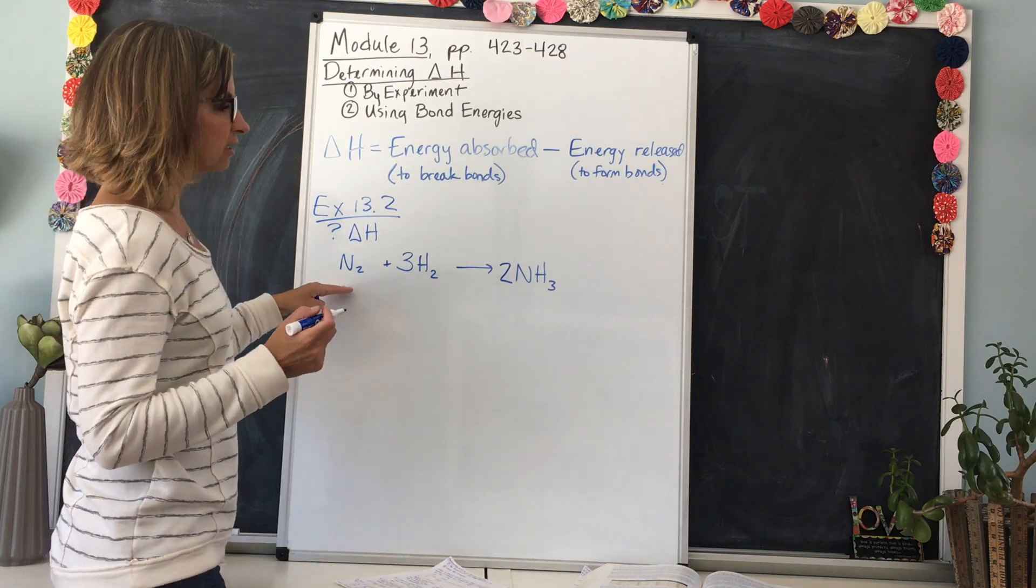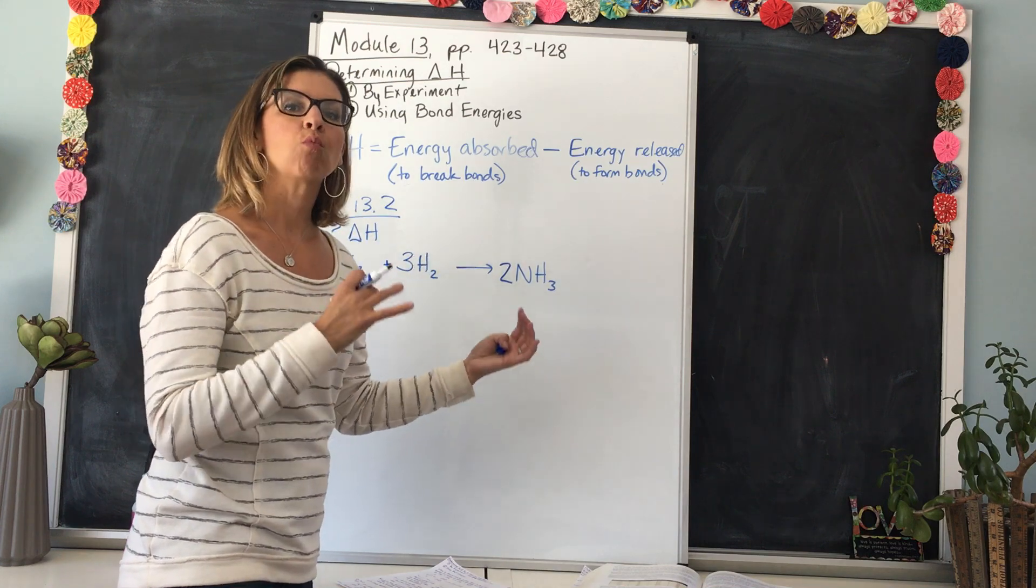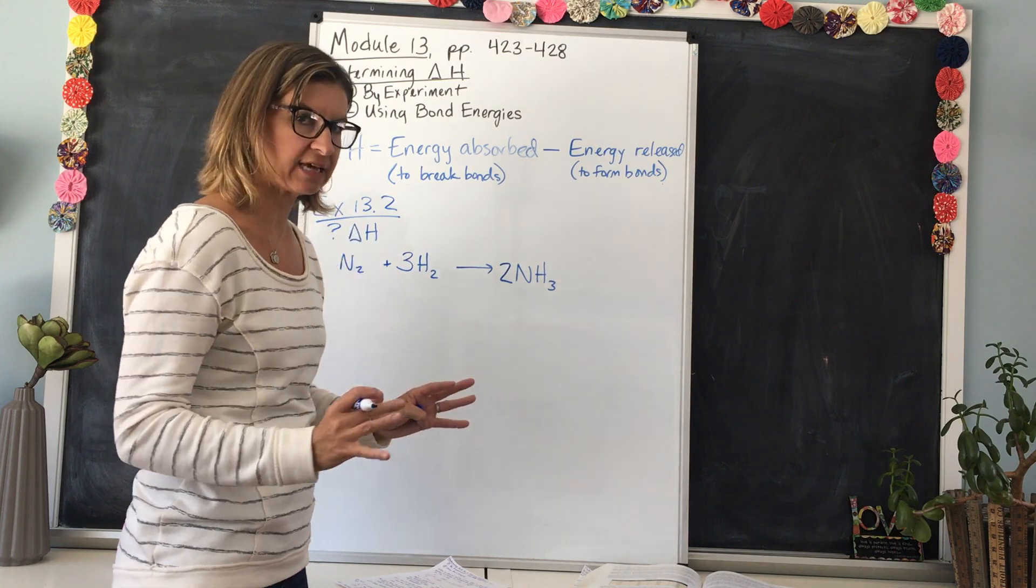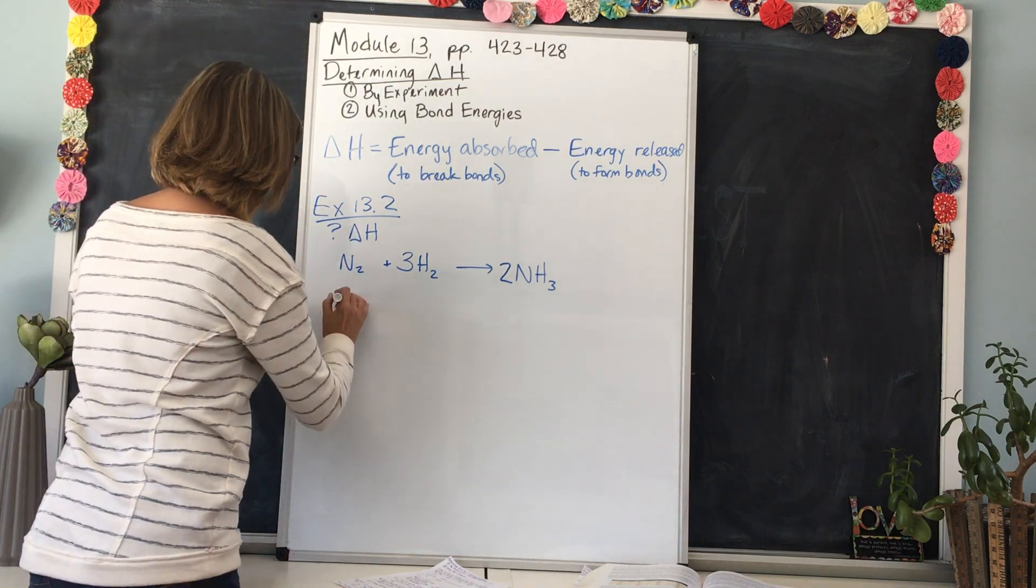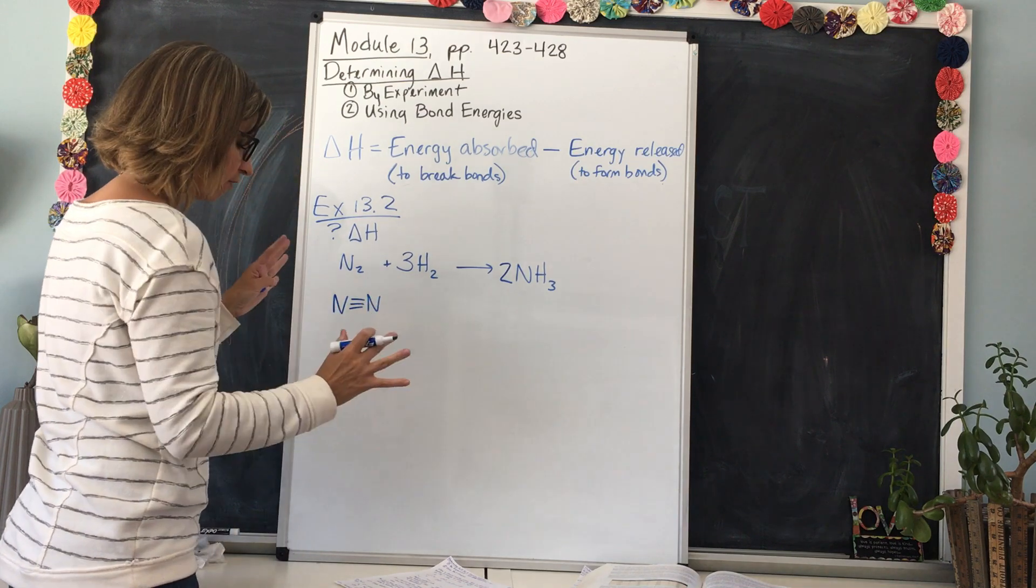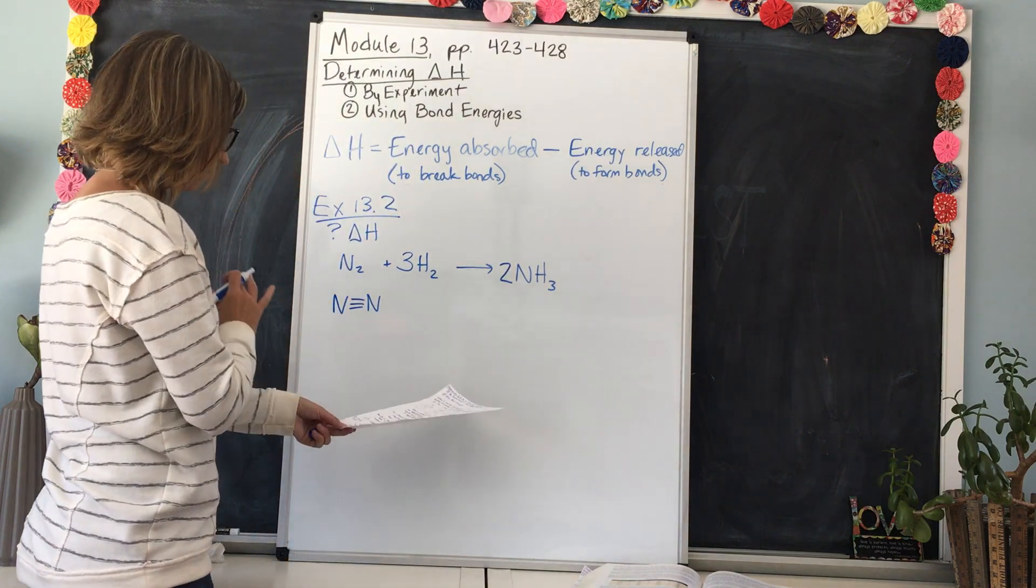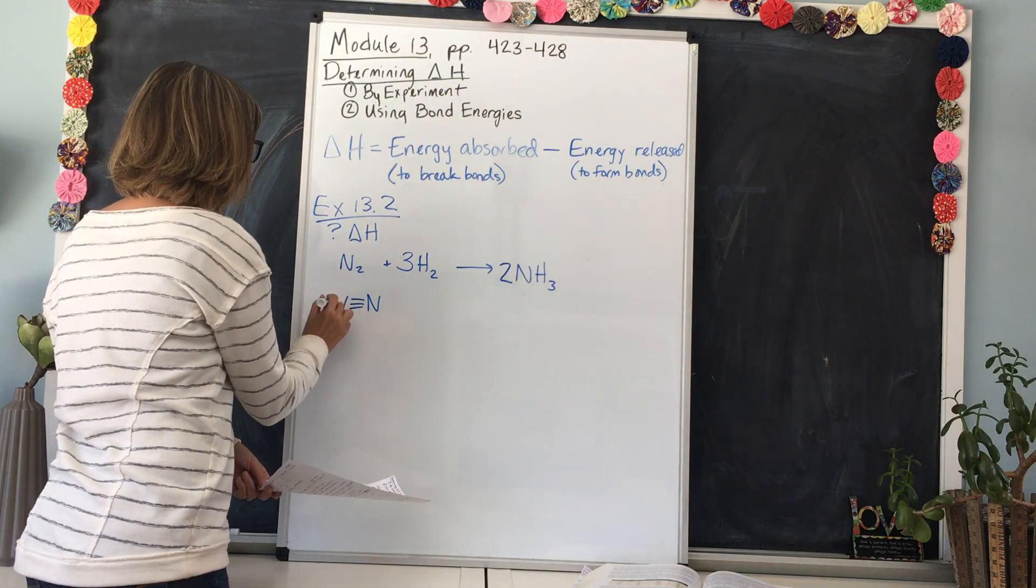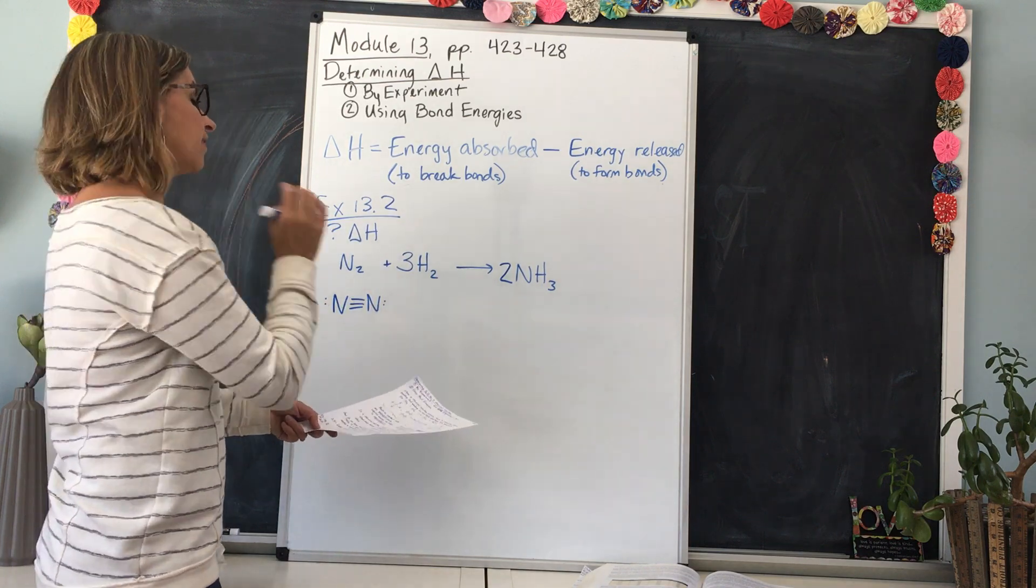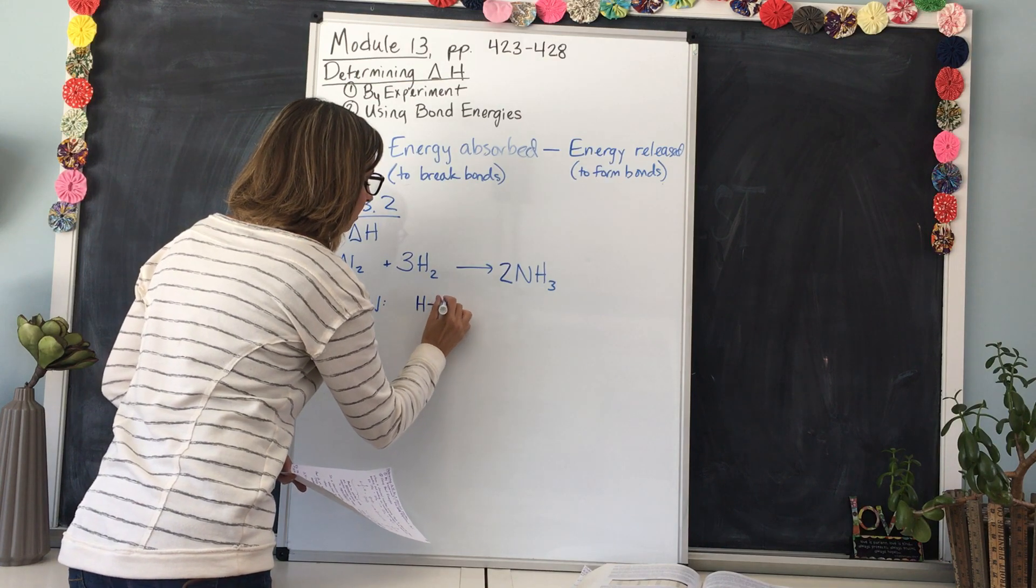And now we need to take a look at what bonds are broken and what bonds are formed, so we're going to draw out the Lewis structures to really see this. So N2 is, and I'm not going to take the time to go over how to make Lewis structures. You're going to have to refresh your memory on that yourself if you need to. But you'd have a triple bond here, and then each nitrogen also has a lone pair.